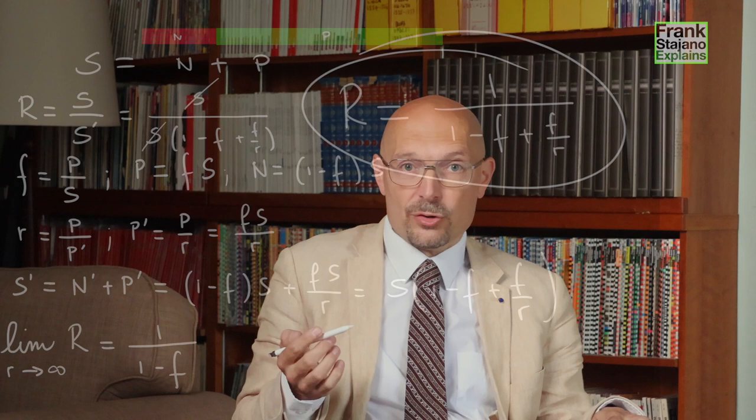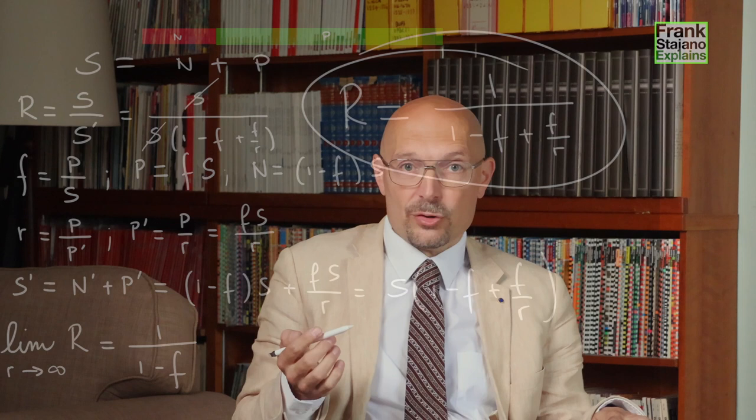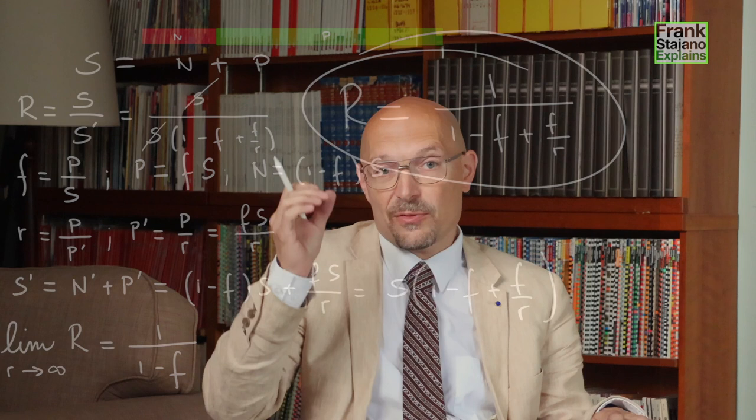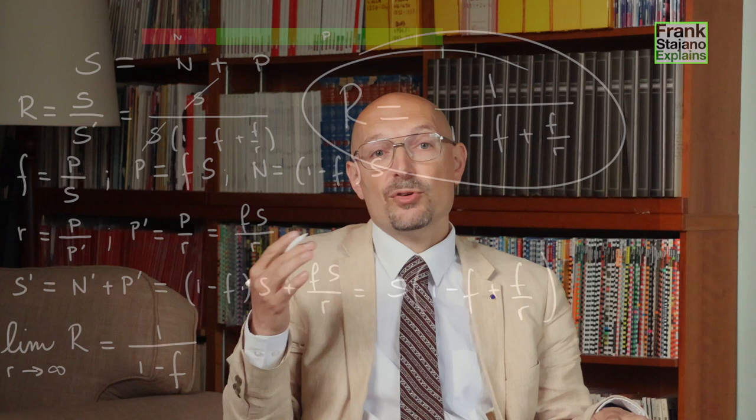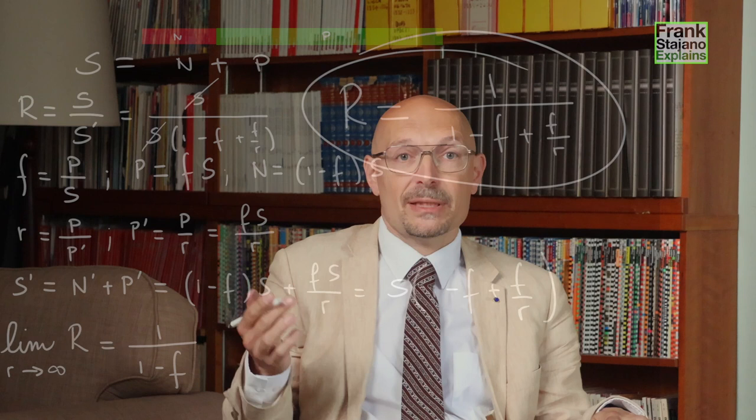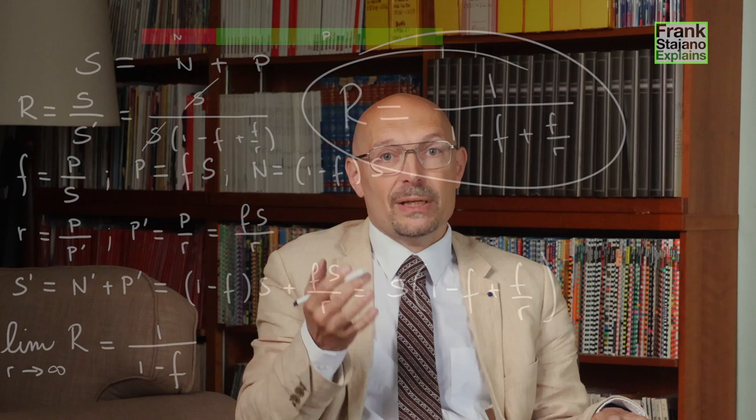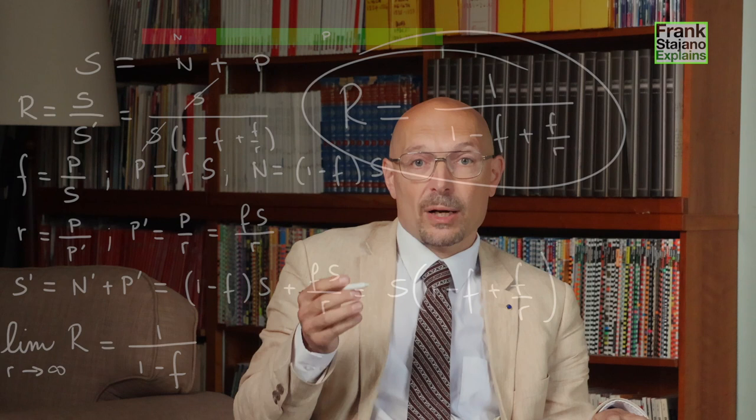So if f, which is the fraction p over s, is a small fraction, so that only 5%, if the green p part is only 5% of the whole, then it means the improvable part does not contribute very much to s. And then I can speed up p as much as I like, but I will always be left with a 95% red part that I can't speed up. And so I will never get to speed up greater than 1 over 95%, which is about 1.05 times, which is nothing to write home about.